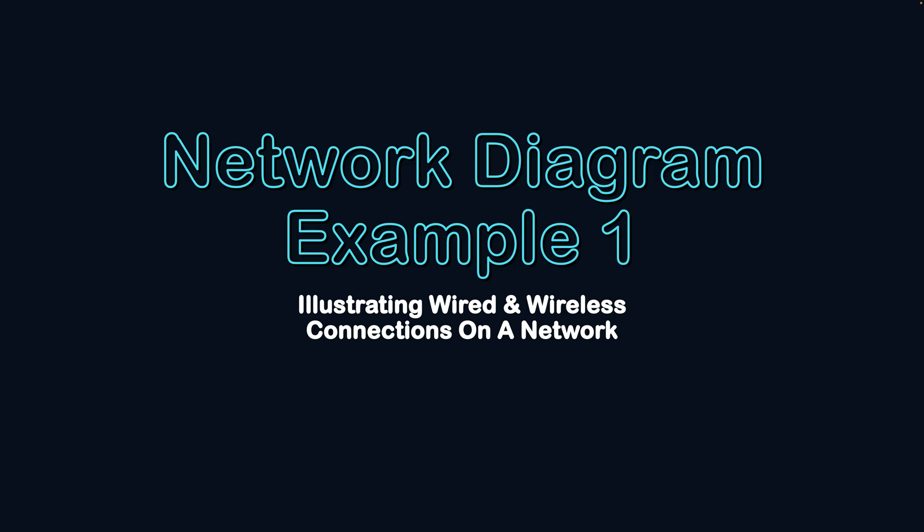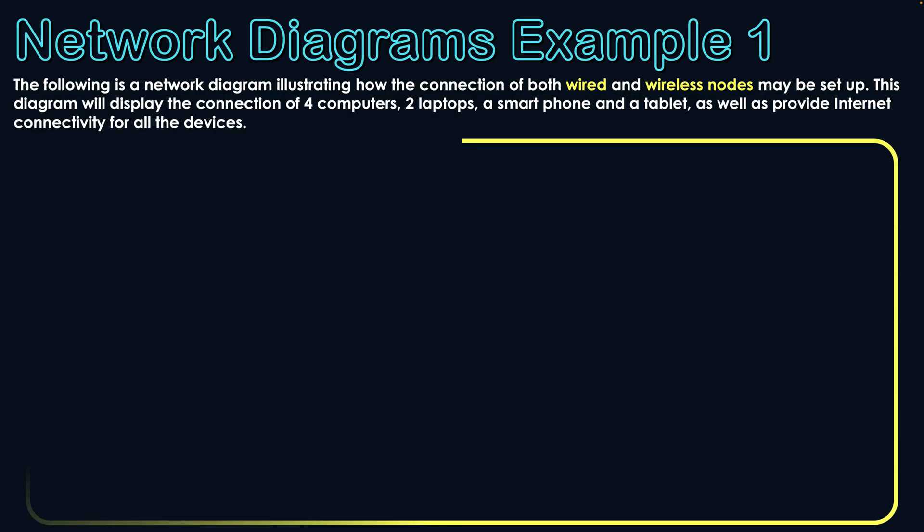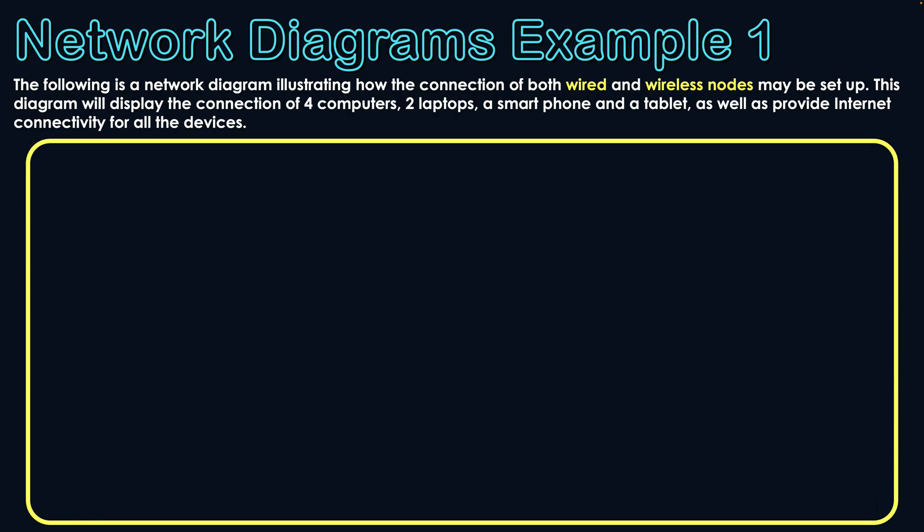Network diagrams example one: illustrating wired and wireless connections on a network. We're going to show an example of a network diagram specifically illustrating both wired and wireless connections for nodes that may be connected within a network.